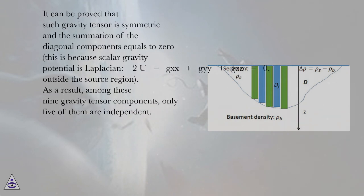It can be proved that such gravity tensor is symmetric and the summation of the diagonal components equals to zero. This is because scalar gravity potential is Laplacian: ∇²U = gxx + gyy + gzz = 0, outside the source region.